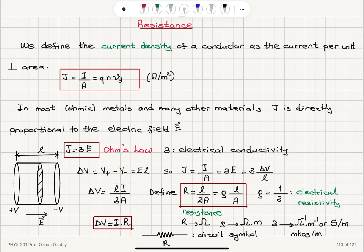To summarize: current density is the current per perpendicular area, equal to QNVdrift according to our model, measured in amperes per meter squared. In most ohmic metals and many other materials, J is directly proportional to the electric field E — J = σE. Note that some non-ohmic materials exist, so this is not a universal rule, but it is the typical case. Ohm's law states that J = σE, where sigma is electrical conductivity.